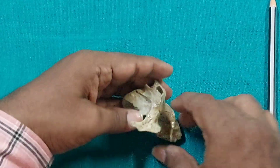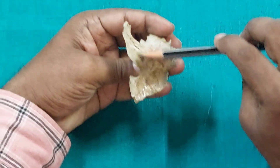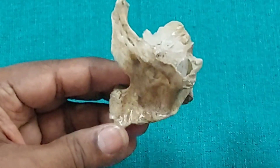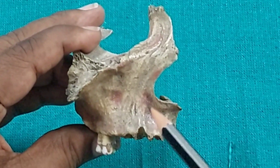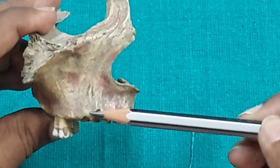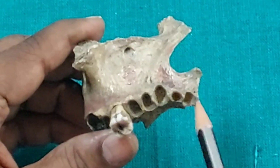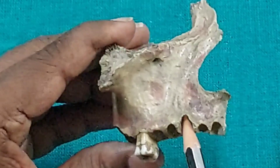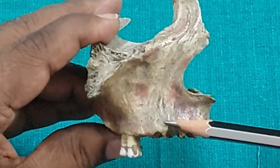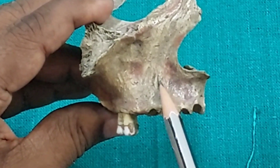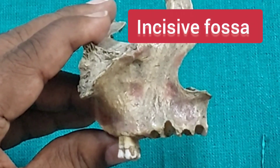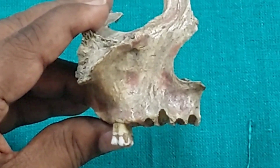On the anterior surface, there is a prominence called the canine eminence, which overlies the socket of the canine teeth. Medial to the eminence is the incisive fossa, and lateral to the eminence is the canine fossa.